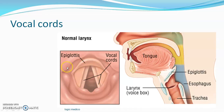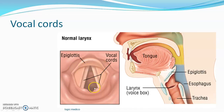The upper portion of the crico-vocal membrane is thickened to form the vocal ligament. The mucosa covering the vocal cord is called the vocal fold. The larynx is called the voice box because of the vocal cords. Approximation of the vocal cords is called adduction; movement away is called abduction. The vocal cords can vibrate, become tensed, or become relaxed. The lungs pump air out through the larynx, and the vibration of the vocal cords produces voice.